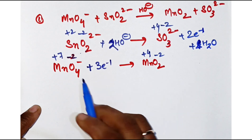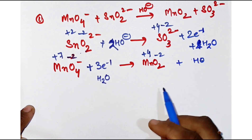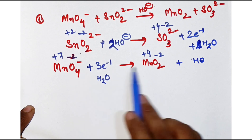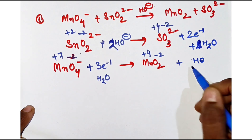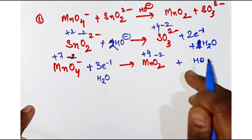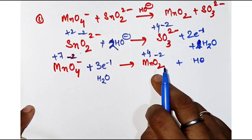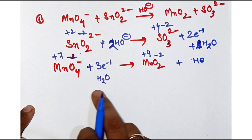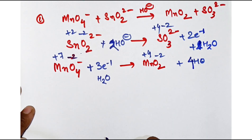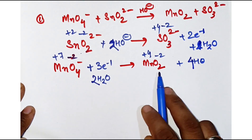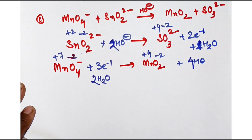Now how many oxygen are required? Here it is four and here it is also two, so I need to balance. If I put two OH⁻ it becomes two plus two — four oxygen. If I put four OH⁻ out here and two water, it becomes four plus two — six on both sides. So now it is balanced.